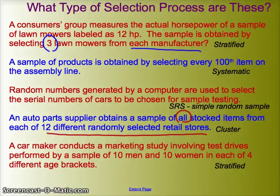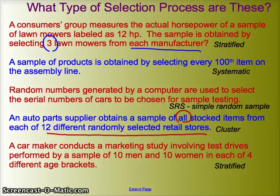Last example from the first set: a carmaker conducts a marketing study with 10 men and 10 women in each of four age brackets. We have four age brackets broken up by gender — eight strata altogether — and within each stratum we selected 10 men and 10 women. We used all groups and randomly selected within each group. That's stratified sampling.